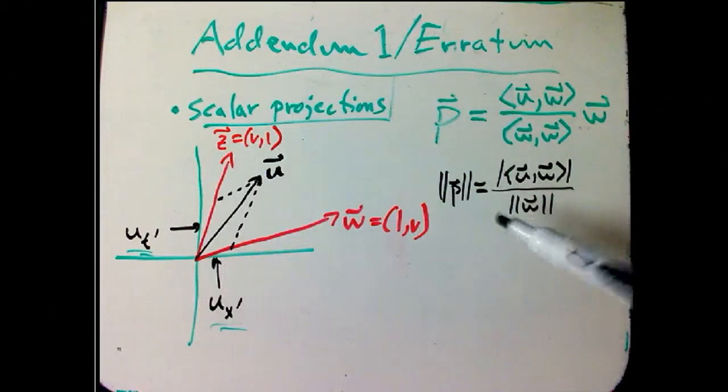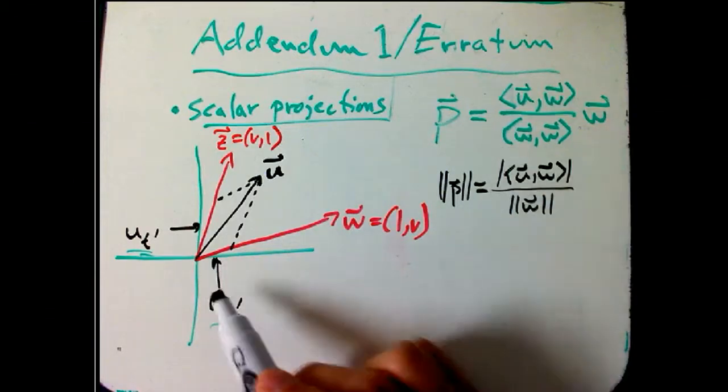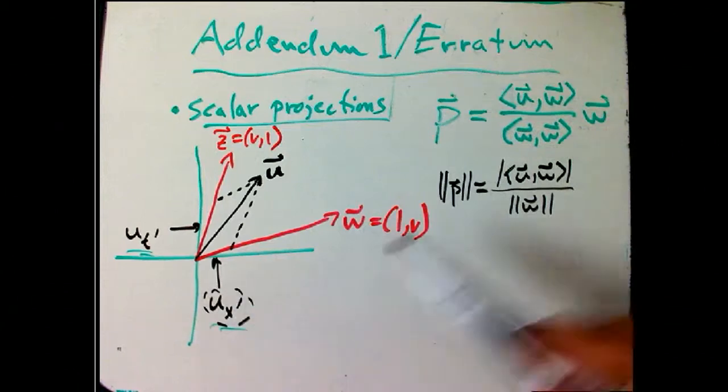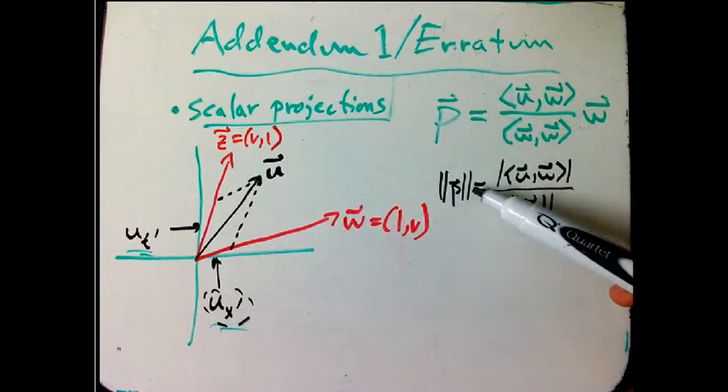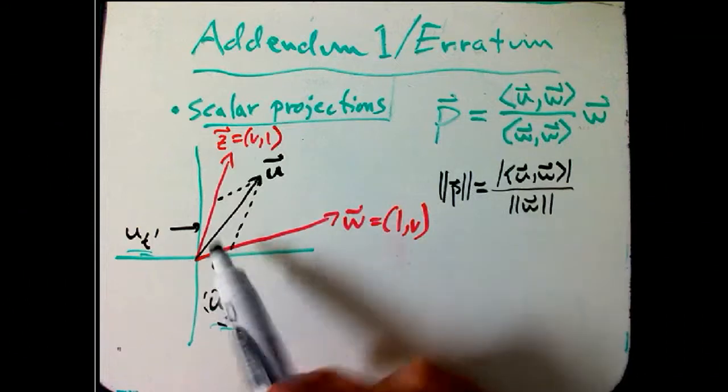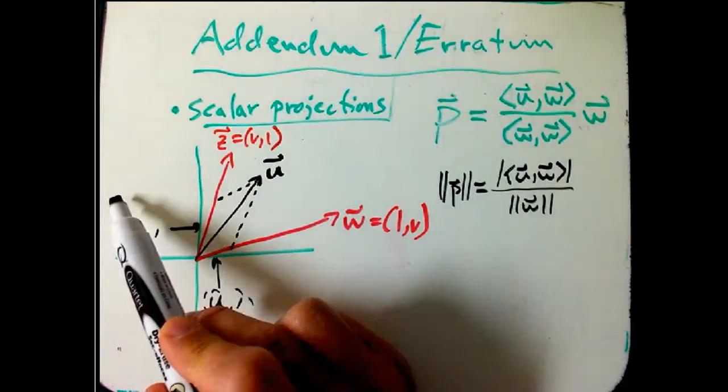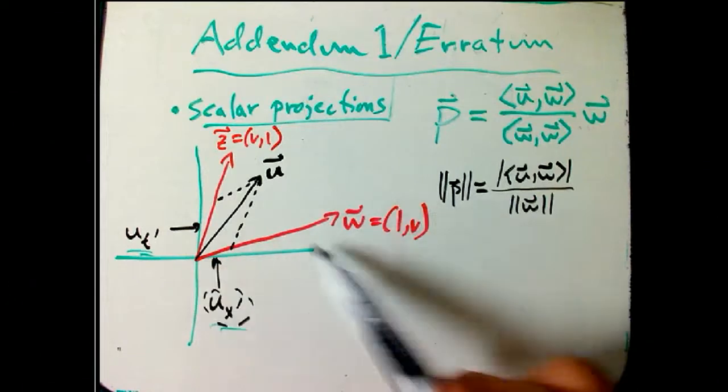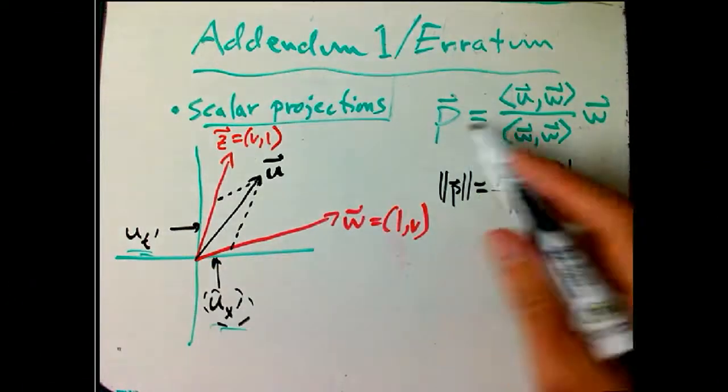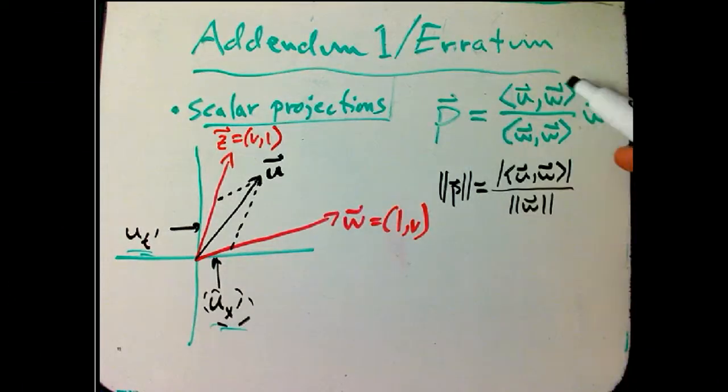The trick is, though, there's one other quantity we want. This is neither of those quantities. It's not the vector projection, because it's supposed to be a scalar, but it's not the magnitude, because it's actually supposed to have sign information. If u, for example, was over here, I'm supposed to get a negative projection. It's supposed to be going in the negative of w. So we really want to be a little more careful.